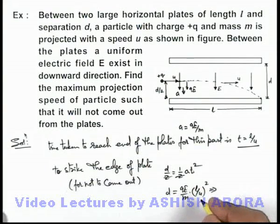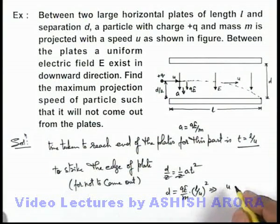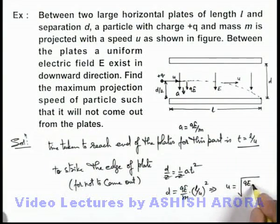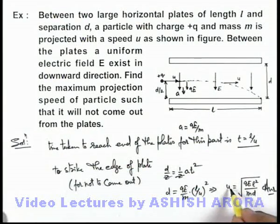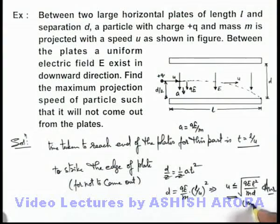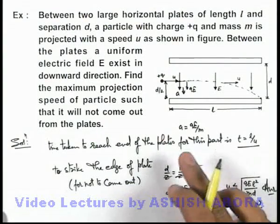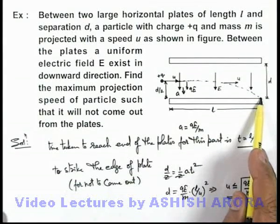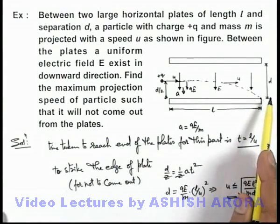On simplifying, we get the value of speed of this particle as u = √(qEL²/md). That is the answer to this problem. If speed is less than or equal to this value, the particle will not come out. This is the maximum possible speed up to which we can throw the particle so that it will strike the edge of the plate without coming out.